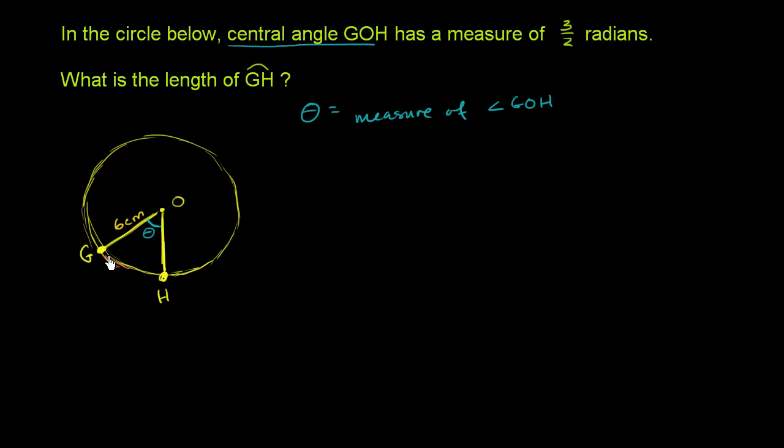Well, arc GH is this right over here. Let's call that S. So let S be equal to the length of arc GH. They also give us the radius is 6 centimeters for this circle. Let's just call that R for now. So the radius is equal to 6 centimeters.